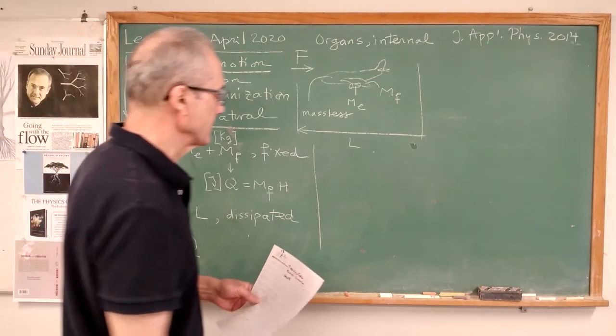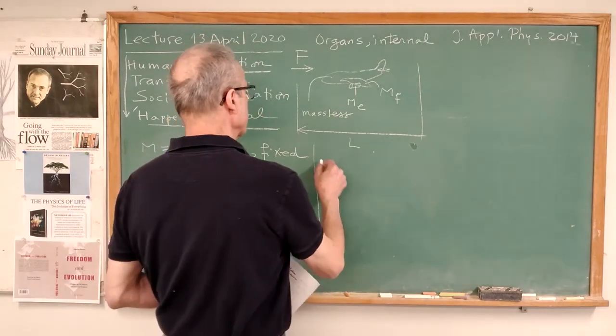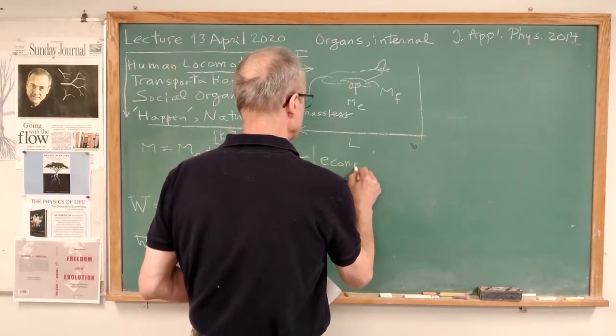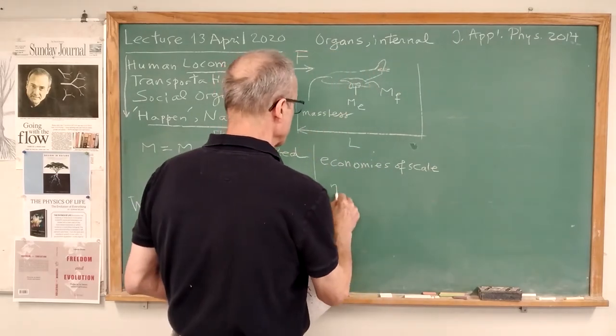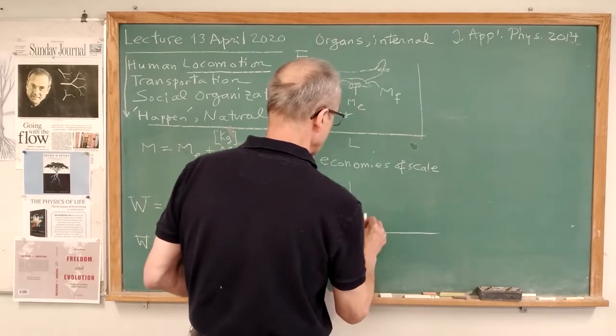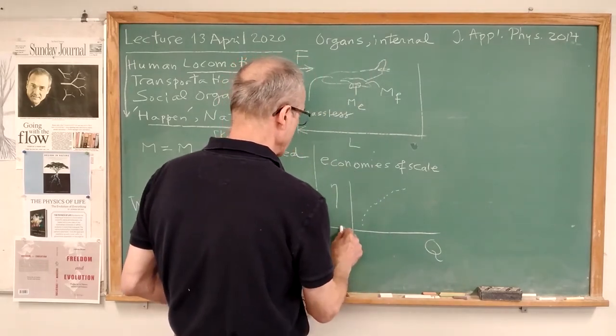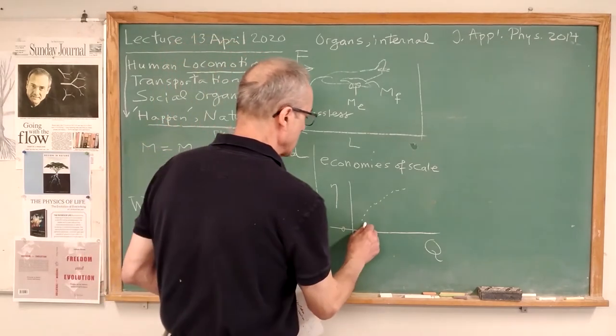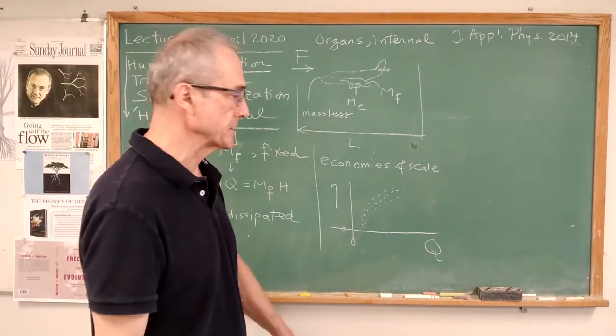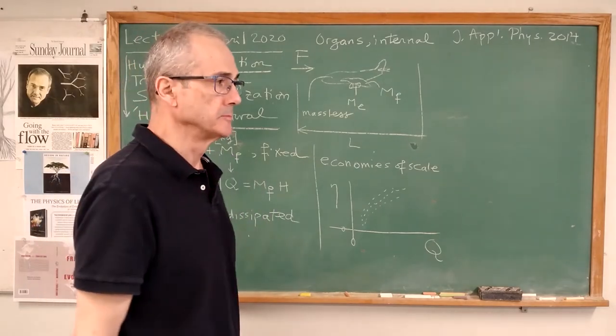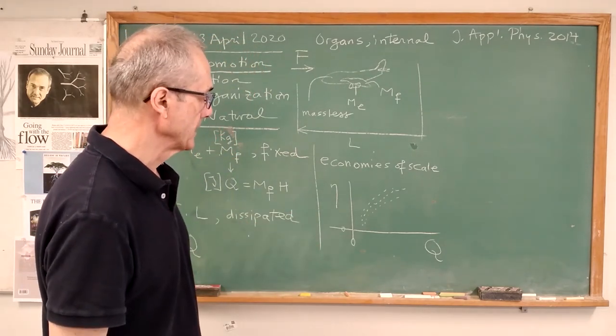That work comes from the engine, which converts the heat input partially. So this work is equal to the energy conversion efficiency, that's called eta, times Q. Finally, there is the phenomenon of economies of scale, which I've taught already in this sequence of lectures.